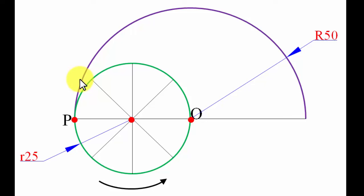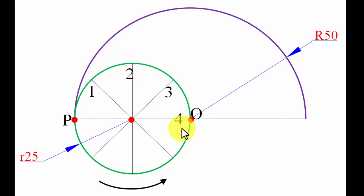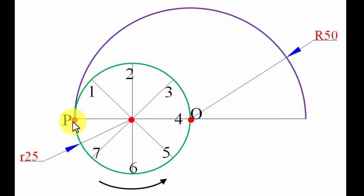As the rolling circle rolls anticlockwise, point P initially comes into contact with the arc, then subsequent points come into contact one by one. As each of the eight division points touches the arc in sequence, the arc automatically gets divided into eight equal parts. Mark these contact points as 1, 2, 3, 4, 5, 6, 7, and 8 (with the starting contact point labeled P).